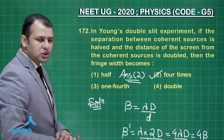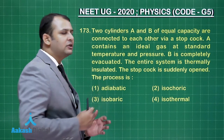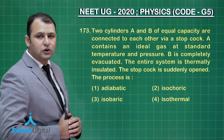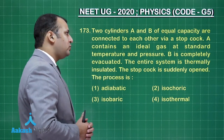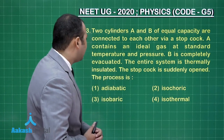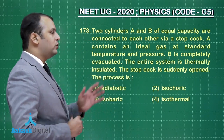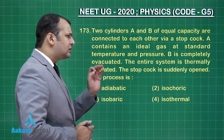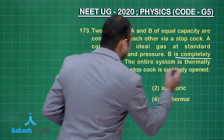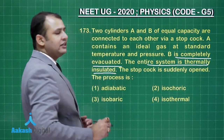Let's move ahead to the next question. Now, question number 173, this question belongs to chapter thermodynamics. As per the question, there are two cylinders A and B of equal capacity and they are connected to each other via stopcock. A contains an ideal gas at standard temperature and pressure and B is completely evacuated. The entire system is thermally insulated.